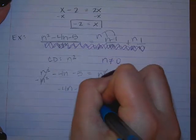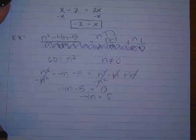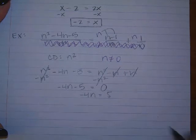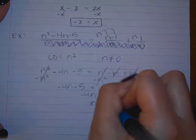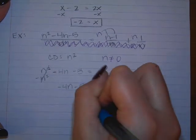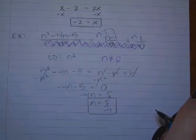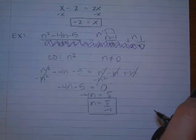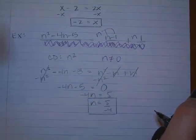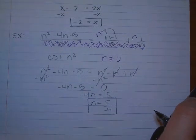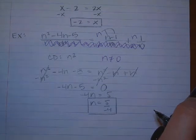Add 5. So negative 4N equals 5. Divide by negative 4. N equals 5 over negative 4. So you could say that fraction is negative 5 fourths. You could say it's 5 over negative 4. You can leave the negative on the bottom. You could write a decimal. Negative 1.25 would be fine there too.